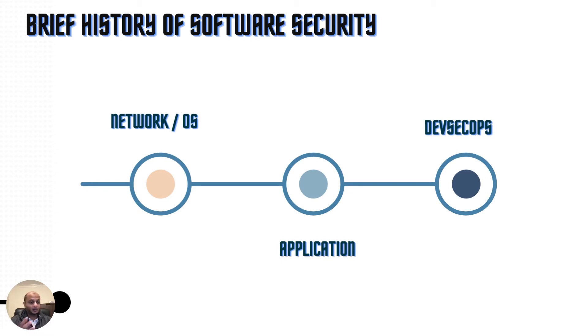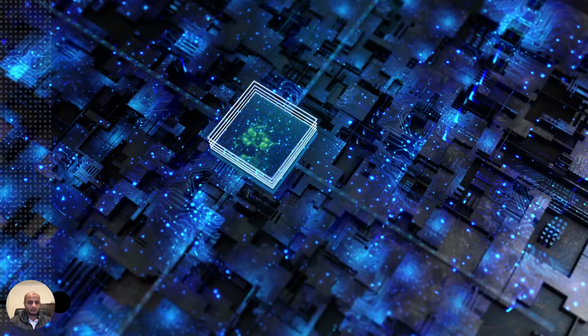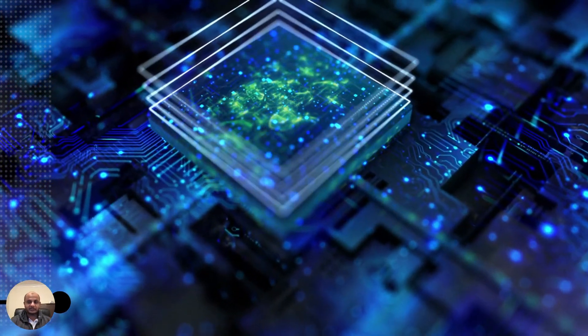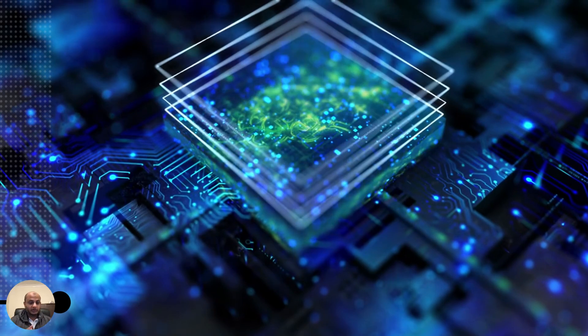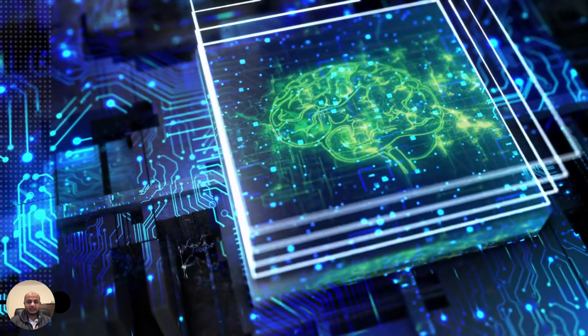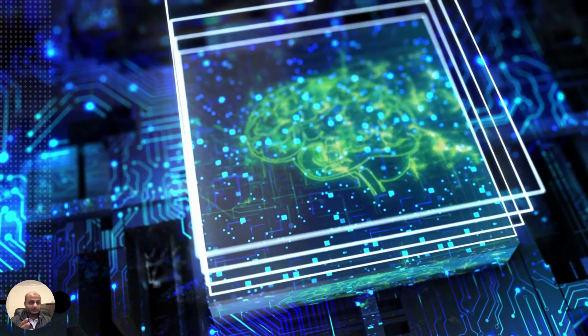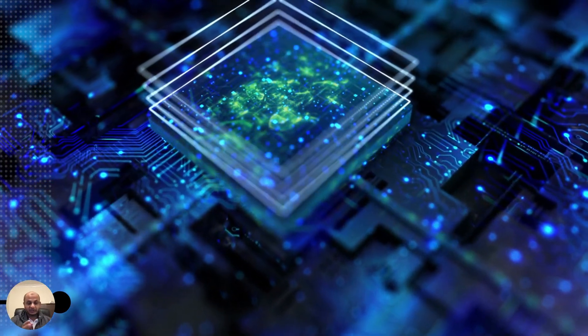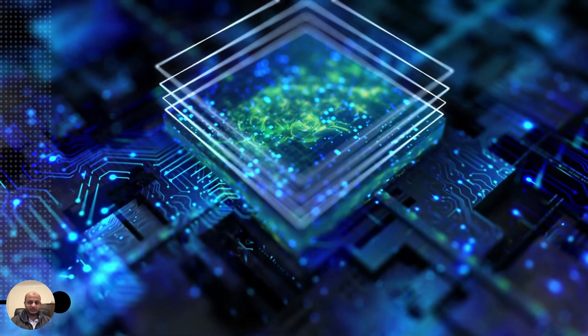However, one thing is still missing, which is artificial intelligence-based systems. What was the point of the whole history lesson? Well, to recap: today software sits on top of a lot of technology and the lessons from before, but we are still in danger of repeating the same mistakes with artificial intelligence-based systems. Because penetration testing does not cover artificial intelligence.